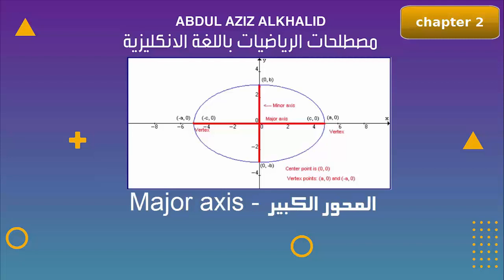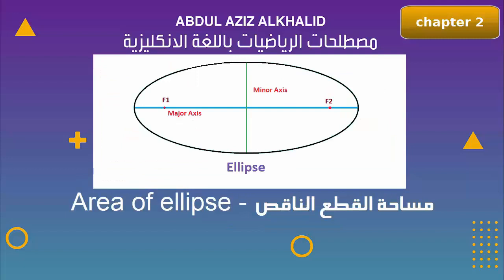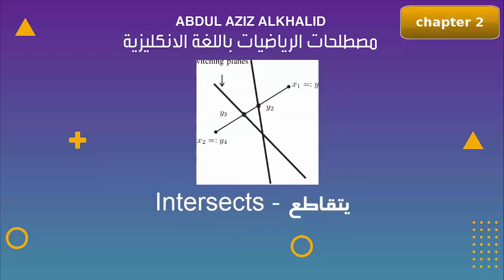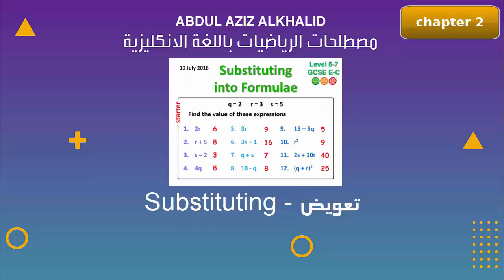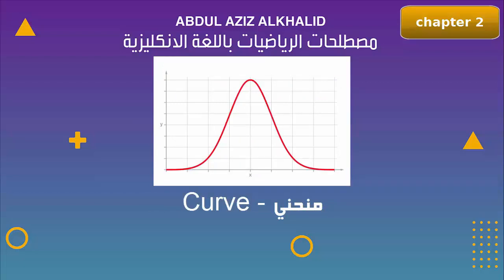Minor axis, the distance between two foci, area of ellipse, parameter of ellipse, intersects, substituting, curve.